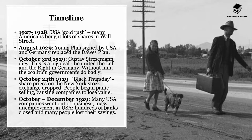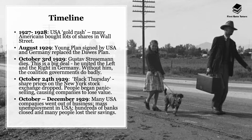Let's begin with a timeline of the most important elements that led to the Great Depression and how it impacted Germany. After the First World War, during the inter-war years, the US experienced great economic success, and by 1927 to 1928 the USA experienced a gold rush particularly on Wall Street, where many large companies are listed on the New York Stock Exchange. As a result, many Americans bought lots of shares in these companies that were doing really well.